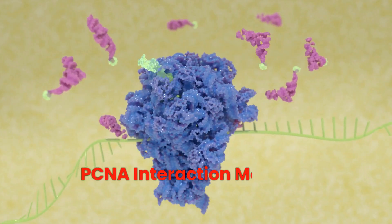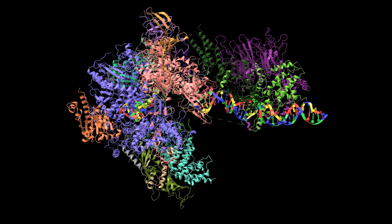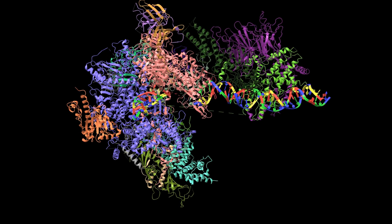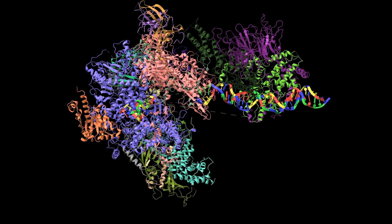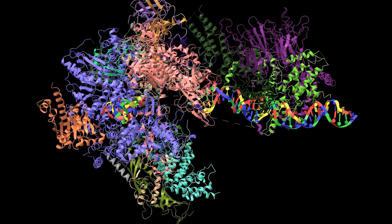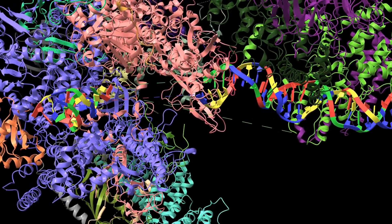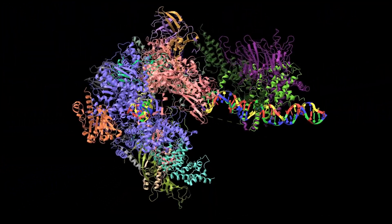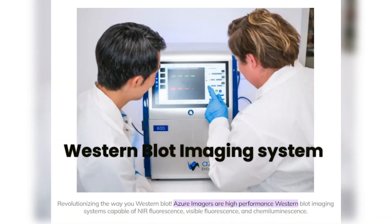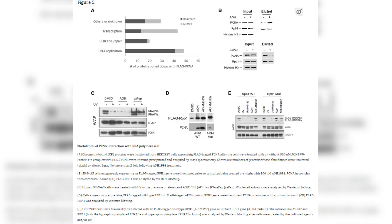PCNA interaction modulation. Image 5 presents chromatography and western blotting techniques that elucidate how AOH 1996 alters PCNA's interaction profile, especially with RPB1, a subunit of RNA polymerase 2. This is a key insight into the drug's mechanism of action.